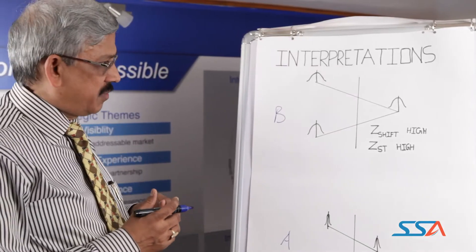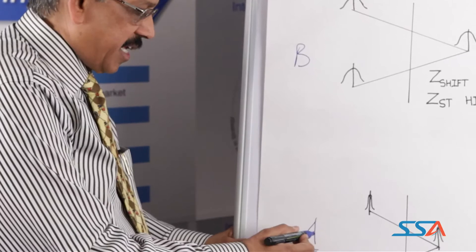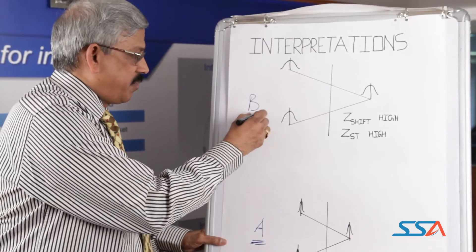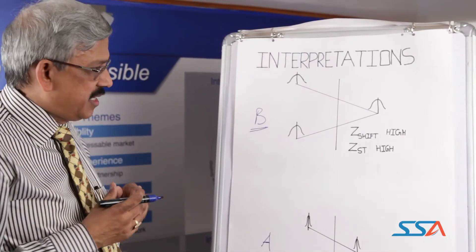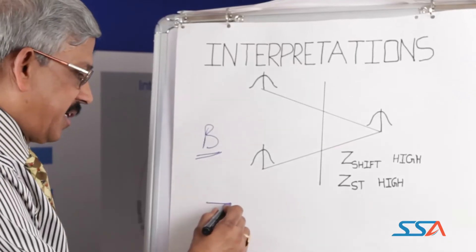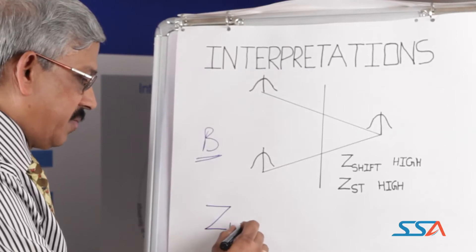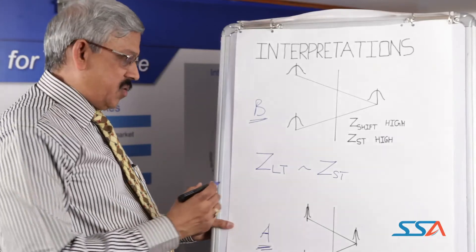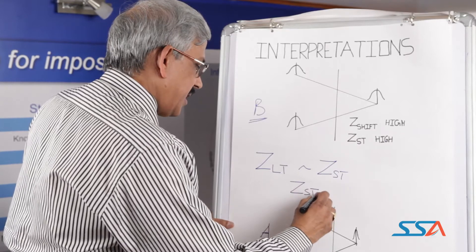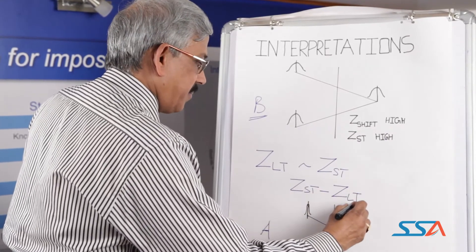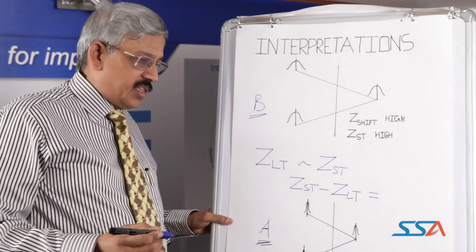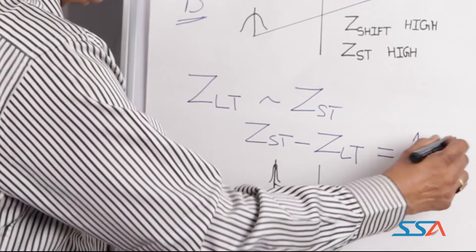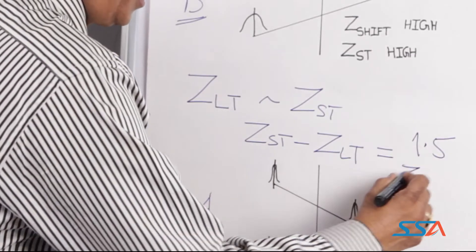Now let's look at the application of short-term and long-term process capability. Let's say machine A and machine B both produce the same shaft with all other parameters the same. When we look at Z long-term versus Z short-term, it is invariably found that Z short-term is a bigger number than Z long-term, and the difference between the short-term and long-term process capability is invariably found to be 1.5. This is called Z shift.